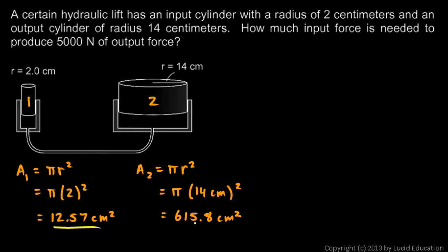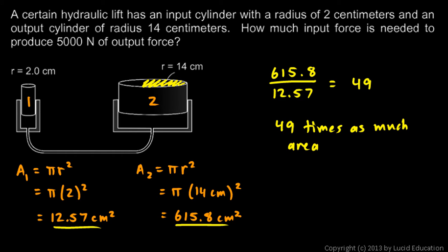So 615.8 divided by 12.57, put that into the calculator and it comes out to 49. That's 49 times as much area on the output cylinder. This area here is 49 times as big as the area on the input cylinder. That means that the force is multiplied by a factor of 49.